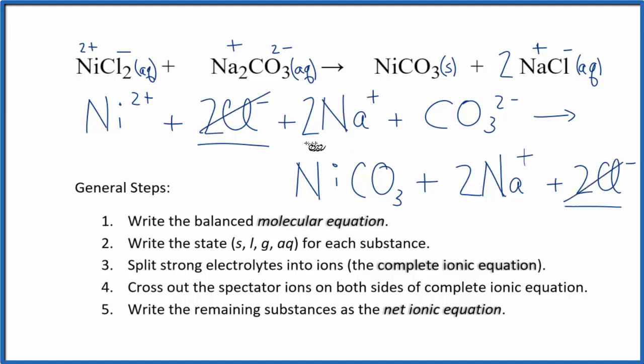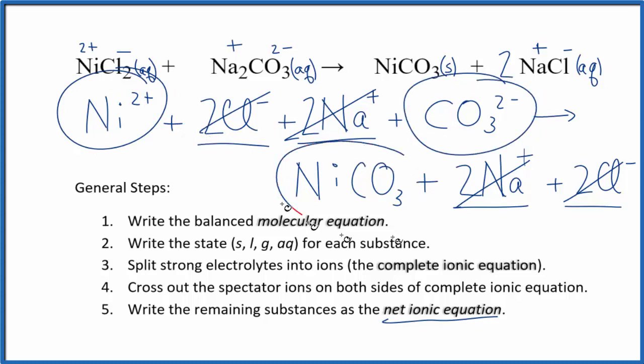In the reactants, we have 2 sodium ions, and we have 2 sodium ions in the products. Cross them out. That leaves us with the net ionic equation: nickel(II) ion, carbonate ion, and then our solid nickel carbonate in the products.